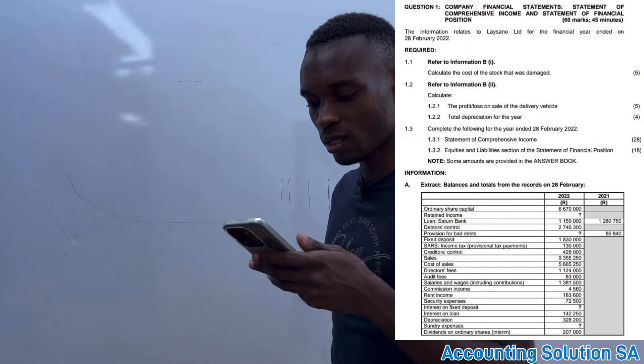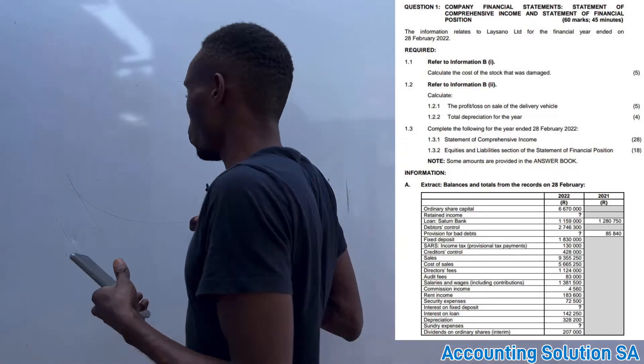I took the final exam paper. The company's financial statements include a statement of comprehensive income and statement of financial position. This question paper contains a question where we are required to calculate the income statement, and another part where we calculate the statement of financial position. The question we are going to do is 1.2.1, which asks us to calculate profit or loss on sale of a delivery vehicle, and 1.2.2 asks for total depreciation for the year.